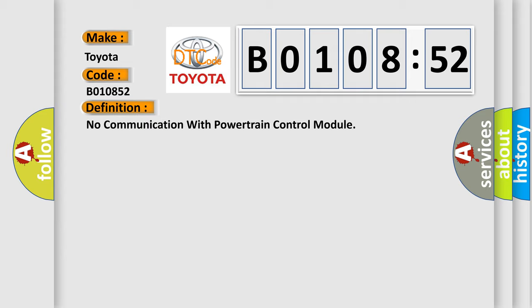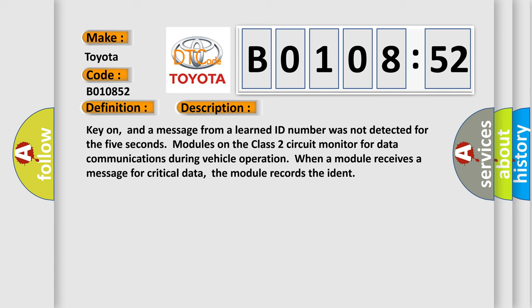And now this is a short description of this DTC code. Key on, and a message from a learned ID number was not detected for the 5 seconds. Modules on the class 2 circuit monitor for data communications during vehicle operation. When a module receives a message for critical data, the module records the ident.